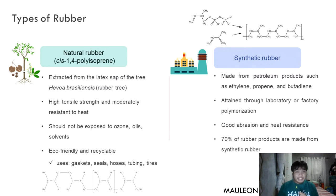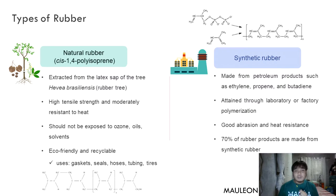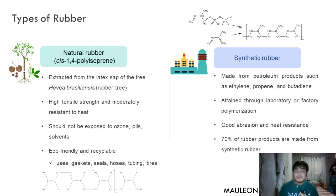For types of rubber, we have natural rubber and synthetic rubber. Natural rubber, or cis-1,4-polyisoprene, is commonly extracted from the latex sap of the tree Hevea brasiliensis, or the rubber tree. It has high tensile strength and is moderately resistant to heat. It should not be exposed to ozone, oils, and solvents.